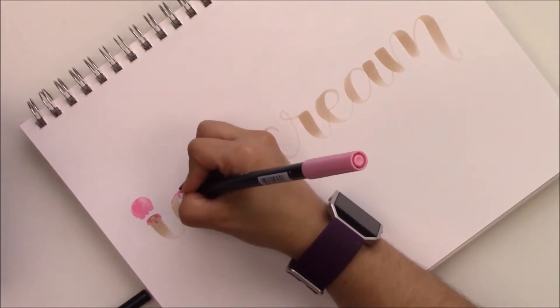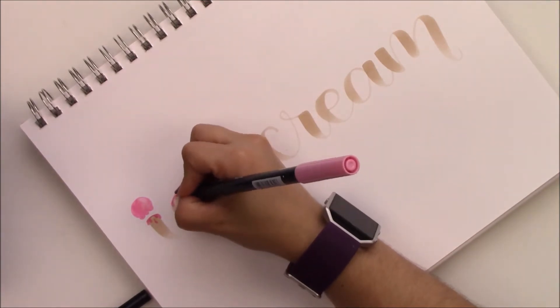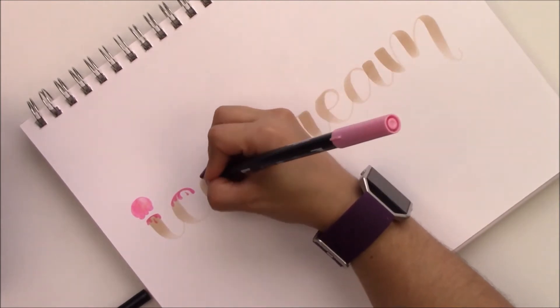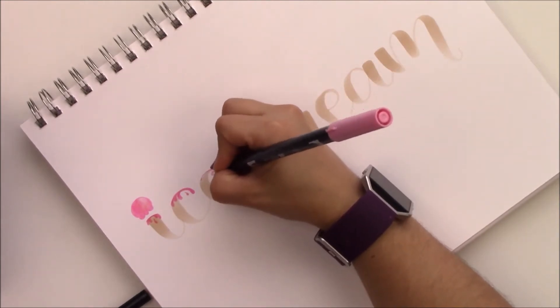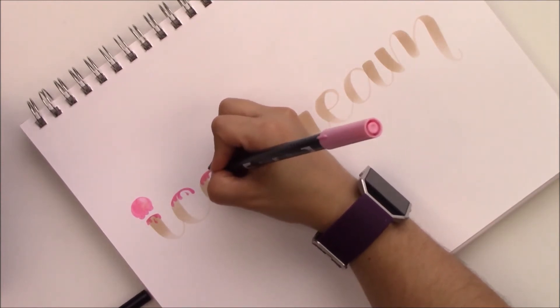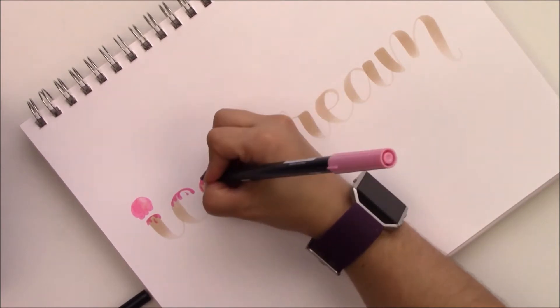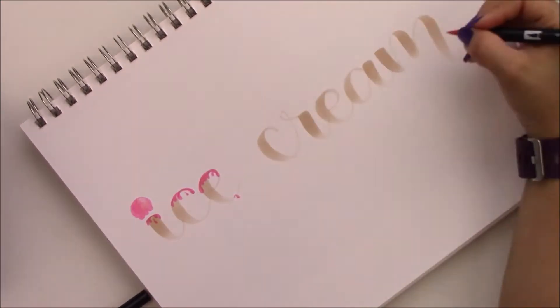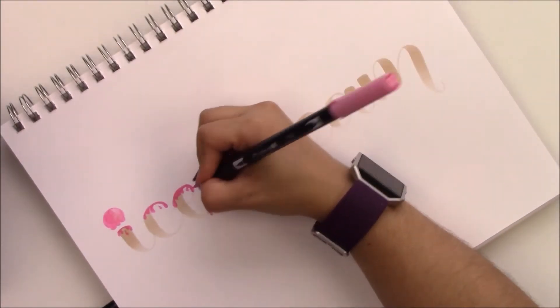To put the dripping of the ice cream, I'm just going to choose the top of the word and create like little drops like there is actual ice cream melting. It's really easy. It does take a little time. The whole piece took me like 30 minutes to make.